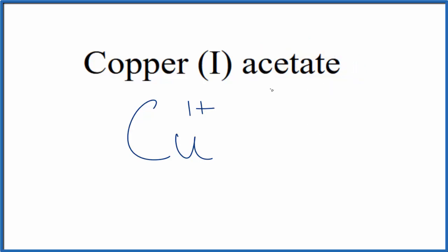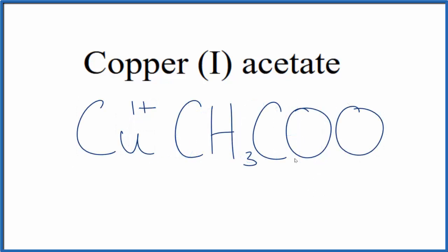So you either memorize that the acetate ion is CH3COO, or if you're allowed, you look it up on a table of polyatomic ions. And the whole acetate ion, the whole thing here, is 1 minus.